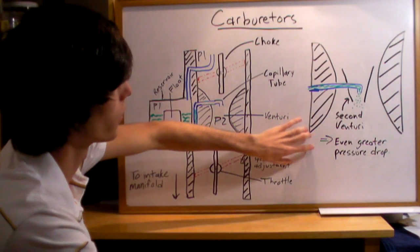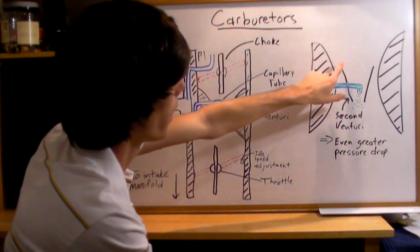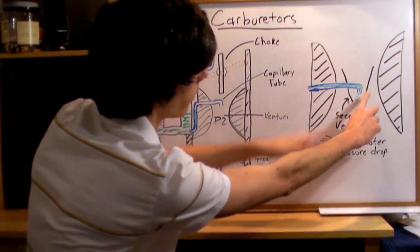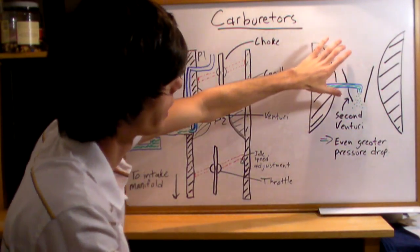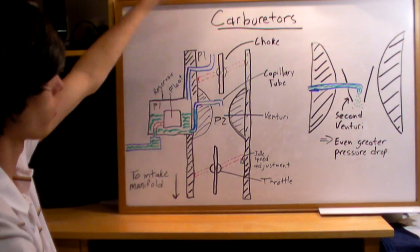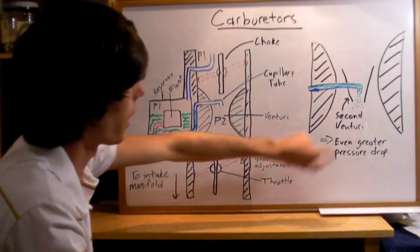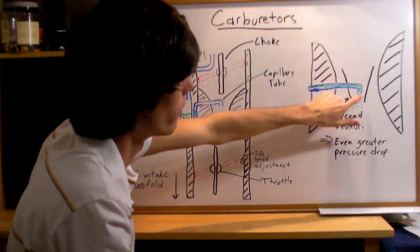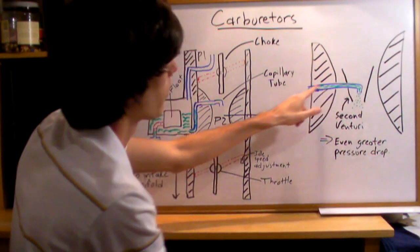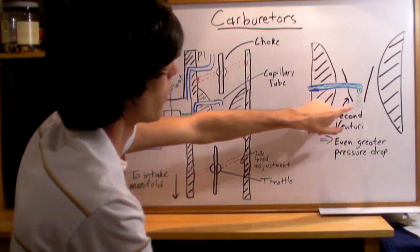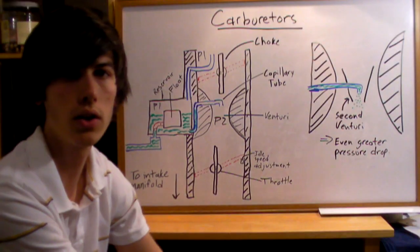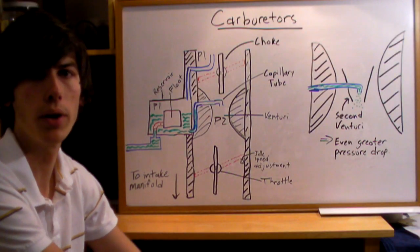Finally, some carburetors will use a second venturi. That'll be a little cone that you place in right here, as I've drawn. So that'll further increase the pressure difference between this top part, where you have the air coming in, and the pressure inside of this little cone. This will be a cone all the way around this capillary tube, and the pressure will drop more, so you'll have more fuel coming out. You have a greater differential and you can control the fuel flow much better.